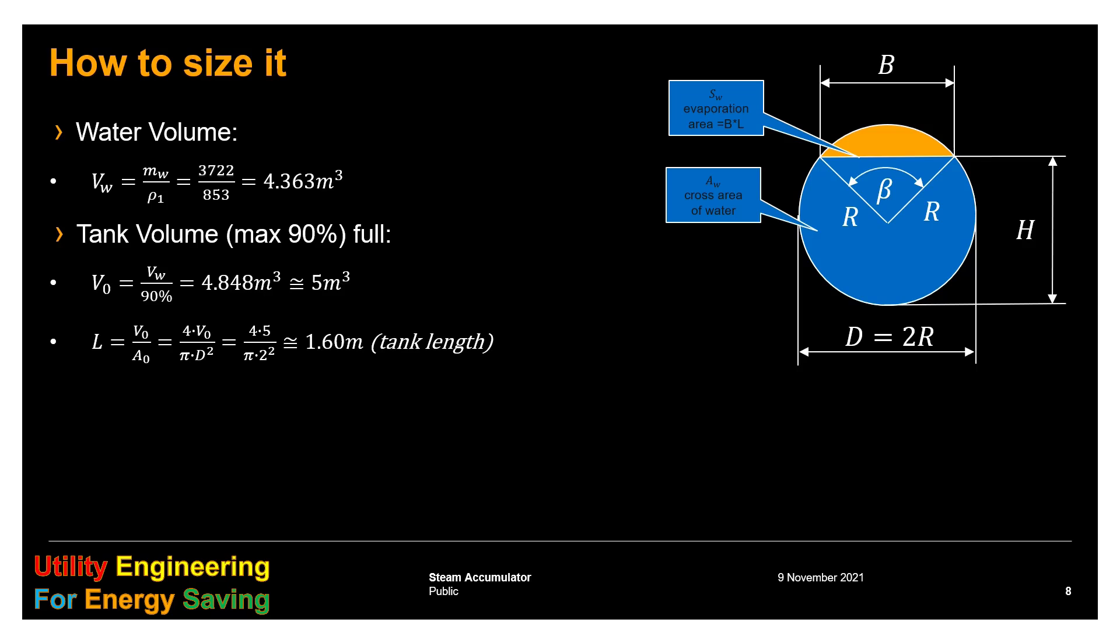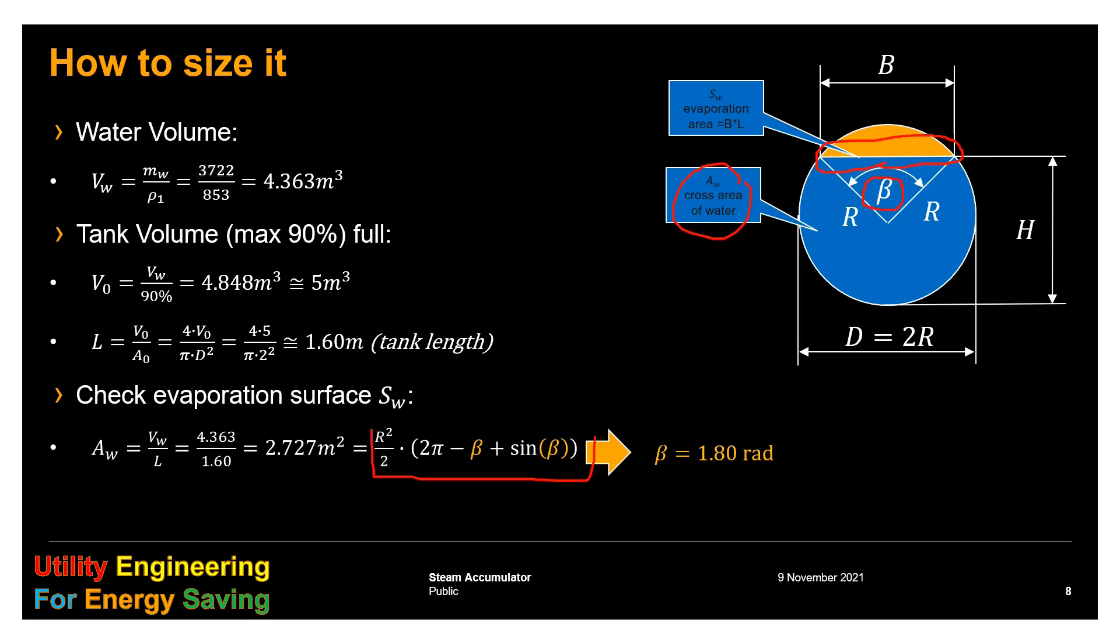We are not done because we need to check the evaporation surface SW. First, we calculate the cross area of the water AW, that is the volume of water divided by the length of the tank, which is 2.727 square meters. We can express this by means of this formula, where beta is this angle, and we get beta 1.80 radians. B, the width of the evaporation area, can be expressed as a function of H, the height of the water level, and the angle beta already calculated.